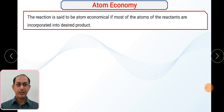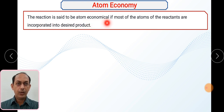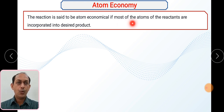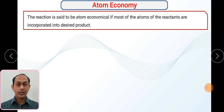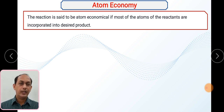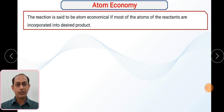The next concept is atom economy. Atom economy is related to the number of atoms taking part inside the reaction. A reaction is said to be atom economical if most of the mass of the reactants are incorporated into the desired product. For example, if we take 10 atoms on the reactants side and all 10 atoms go into the product, that reaction is atom economical. But if the ratio is 5 to 5 (product to byproduct), it is not atom economical. Whatever atoms you take on the reactants side must go into the product only, not into byproduct.